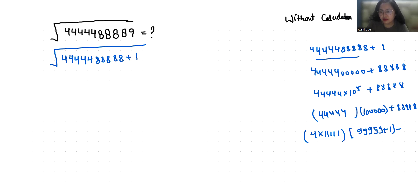If I take 11111 common, it becomes 4 times 11111 times 9, plus 1, plus 8 times 11111.